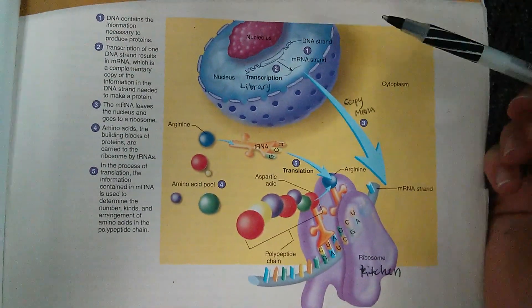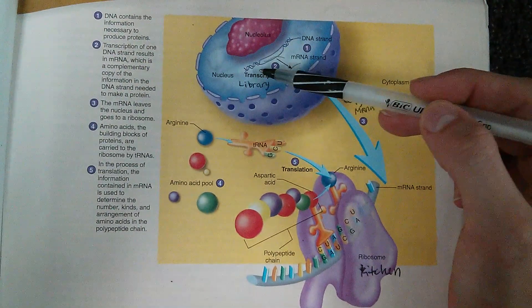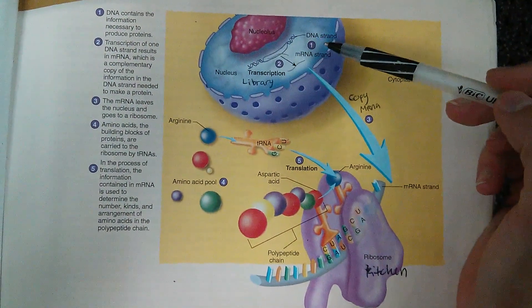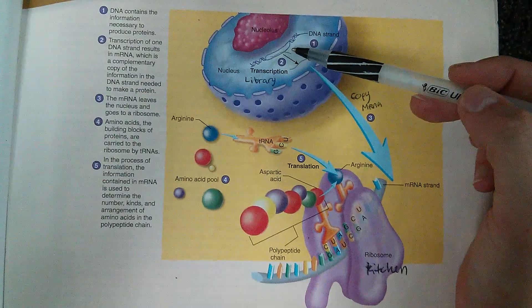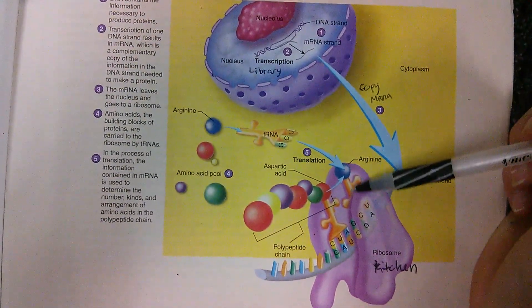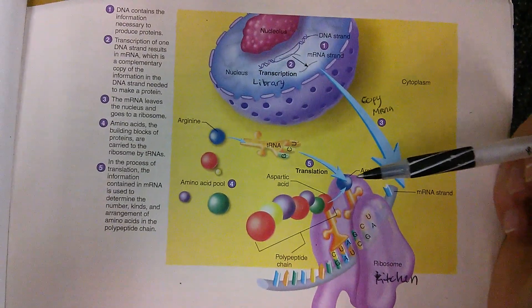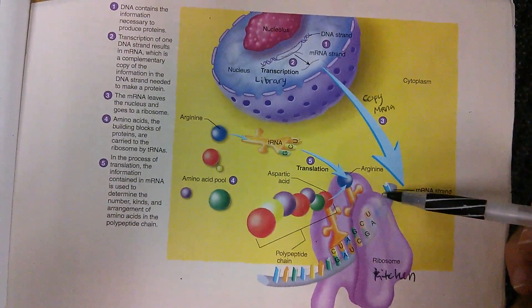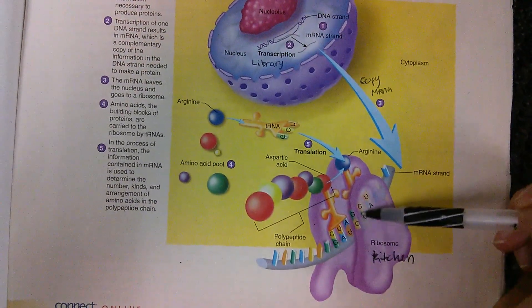So we know that it starts off in the nucleus with the DNA strand here, and that transcription happens between taking a copy of the portion of DNA that you want to replicate, and then it goes into the ribosome where translation occurs, and this is the new strand that you're using.